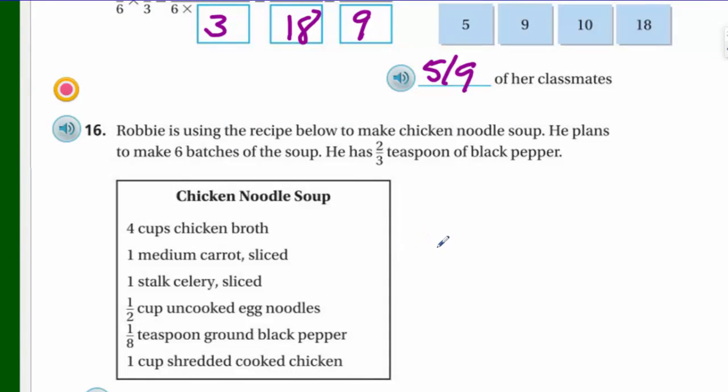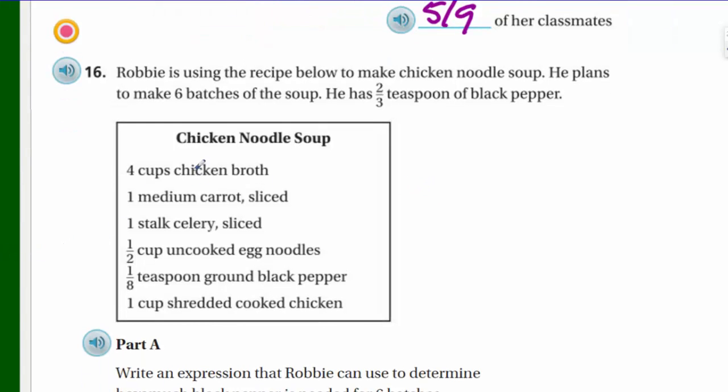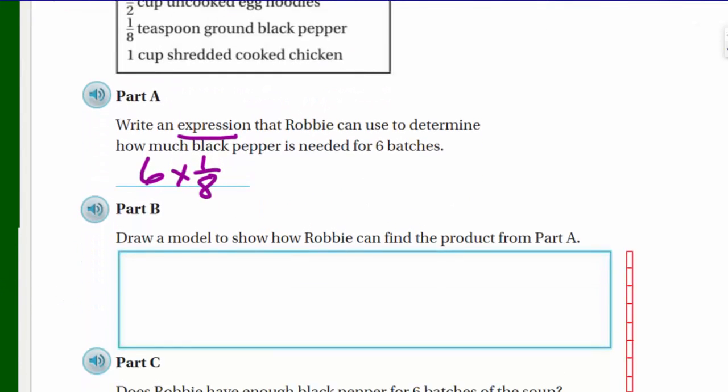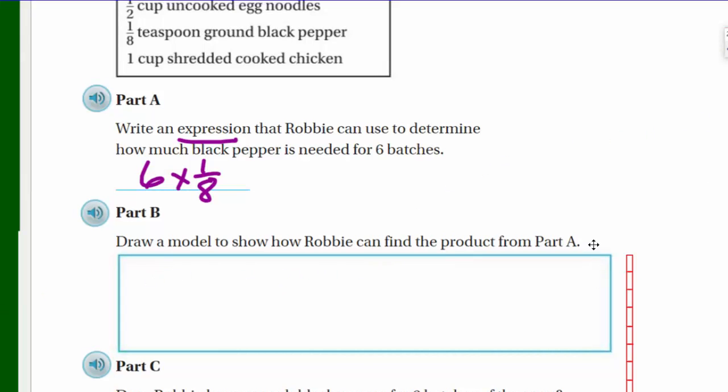Next problem. Robbie is using the recipe below to make chicken noodle soup. He plans to make 6 batches of the soup. He has 2/3 teaspoon of black pepper. We've got some broth, some medium carrots. Those are all our little ingredients. Now Part A says write an expression that Robbie can use to determine how much black pepper is needed for 6 batches. A key word here is an expression, so we're not being asked to solve this, just an expression. Well, it says one teaspoon of ground black pepper. This would be one batch. So if we needed 6 batches, we're just going to take the 6 batches times 1/8 teaspoon. That's it. We don't have to do anything else, just as an expression.